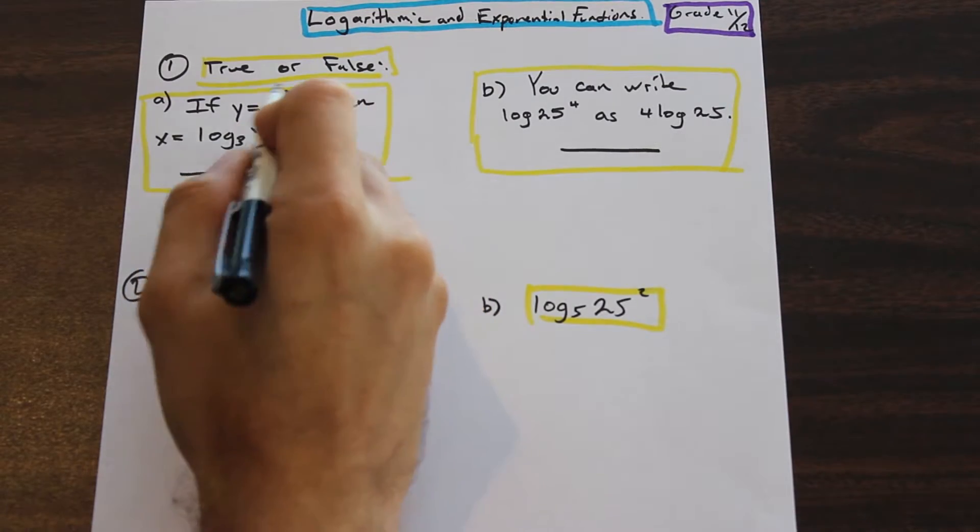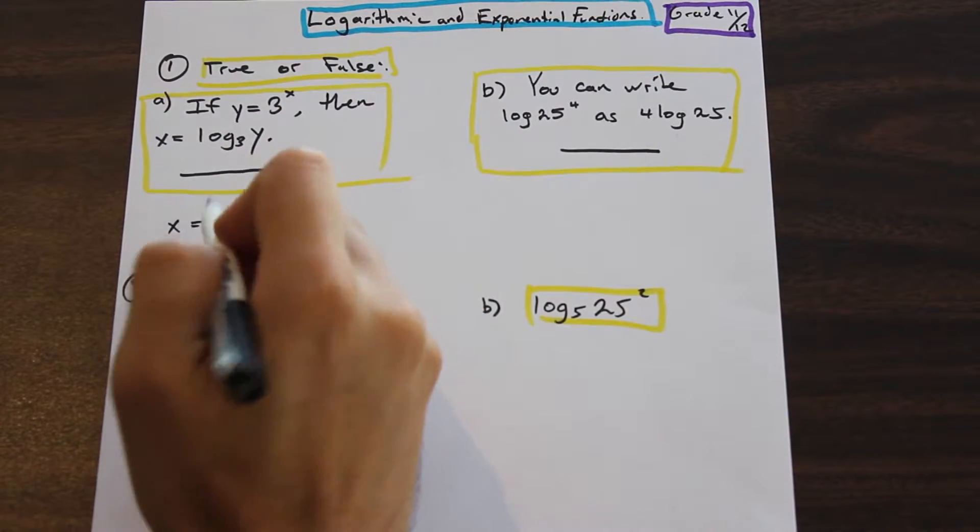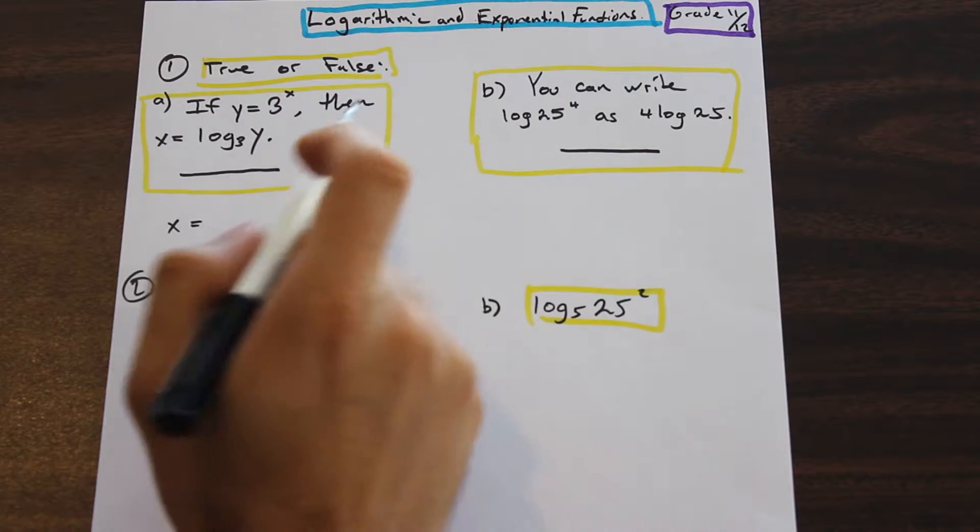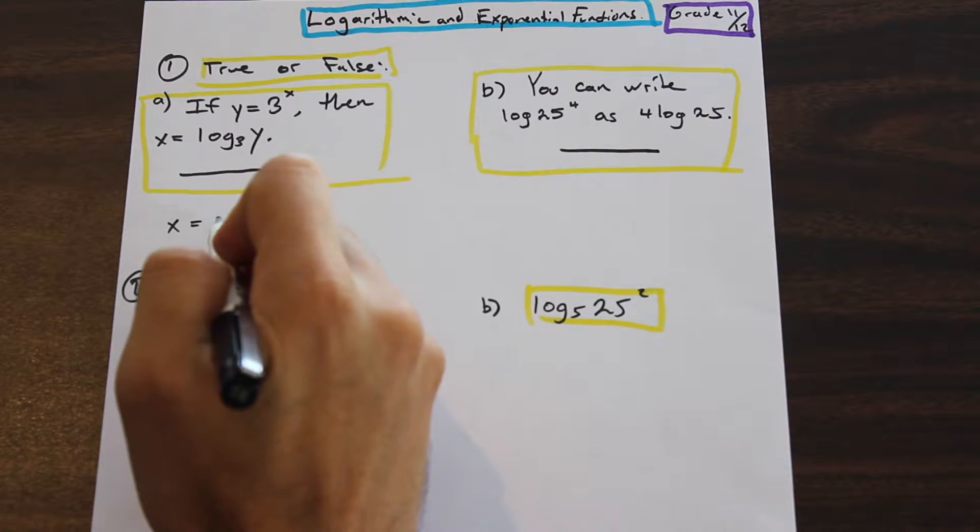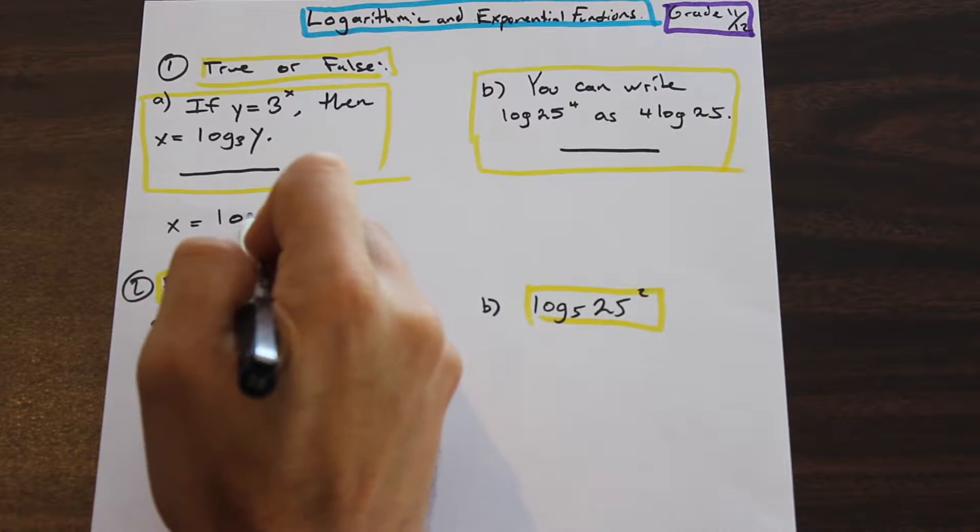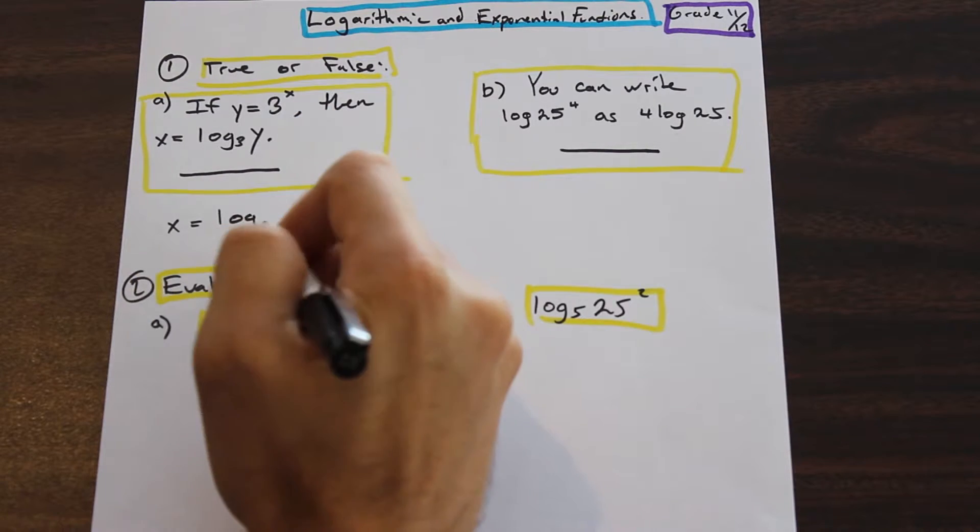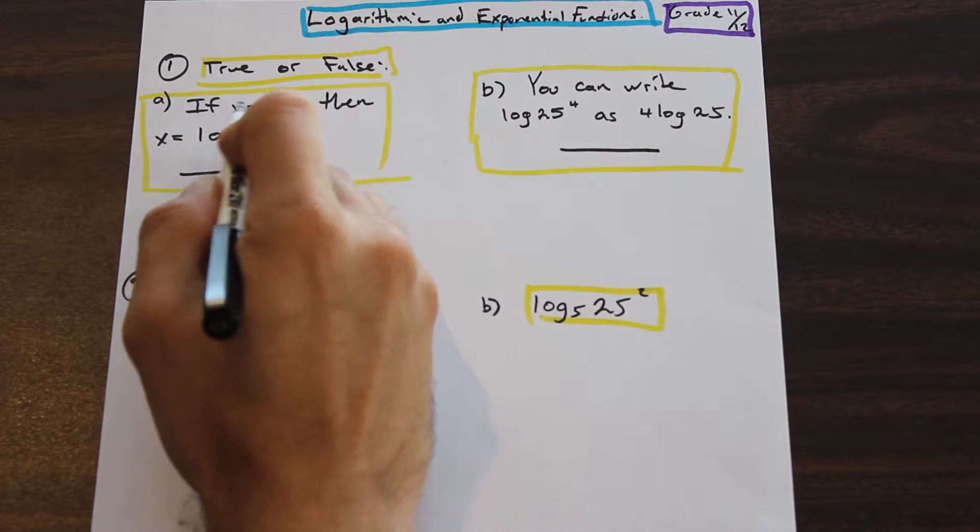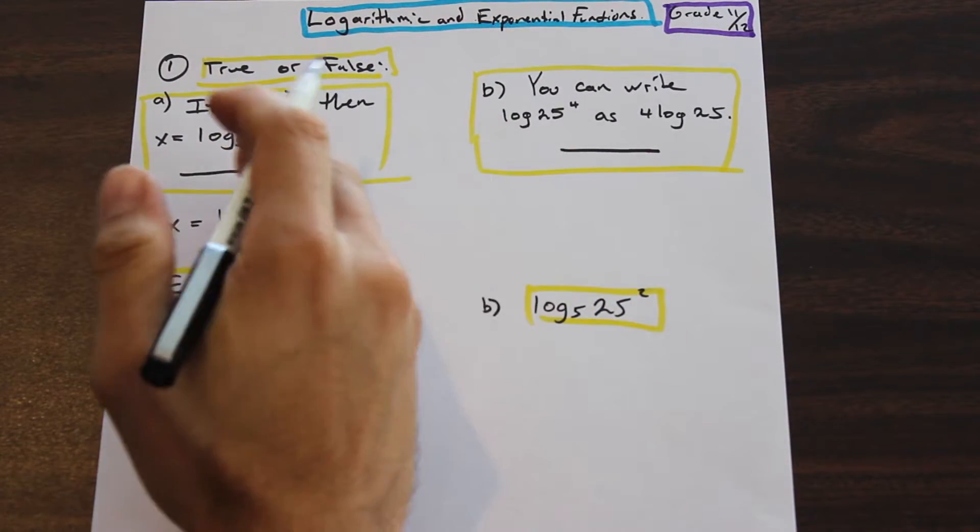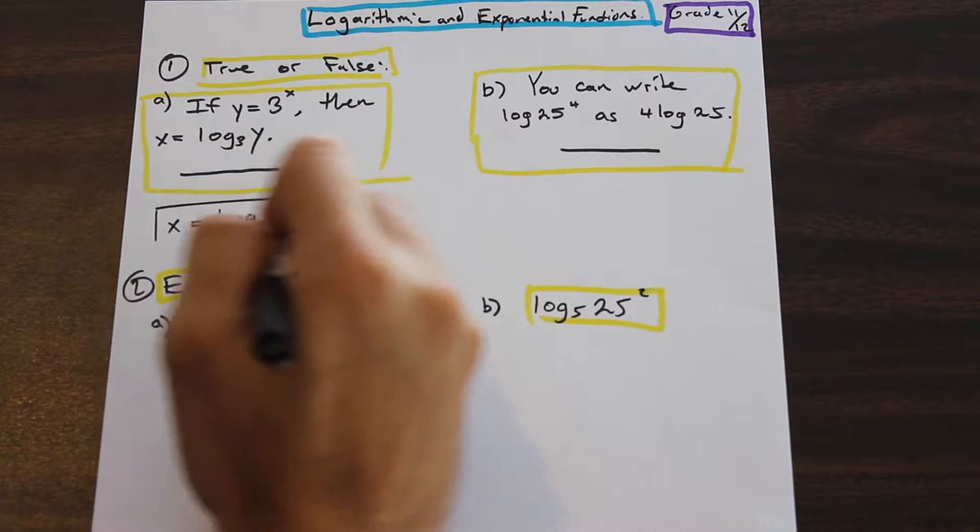We can always rewrite that as - we'll make the whole thing equal to x. This is just something that you can memorize. X is equal to log a, which is three, times y, or log a argument of y. You can always rewrite y equals a constant to the x like this.